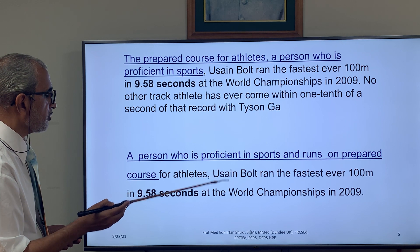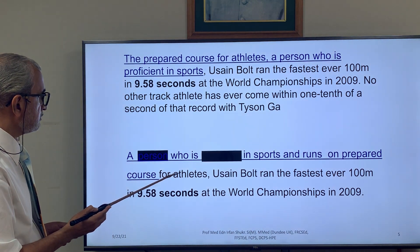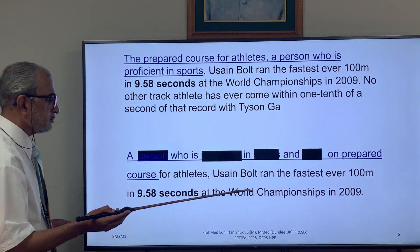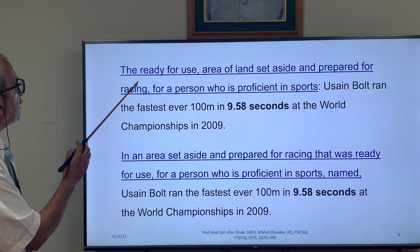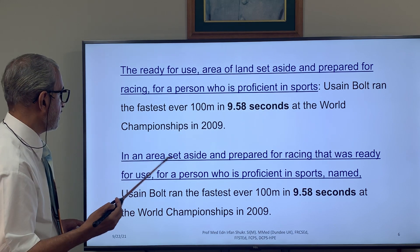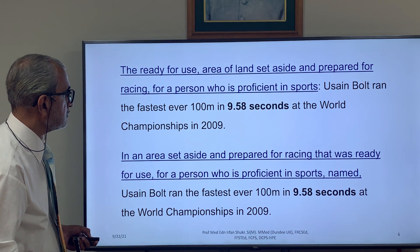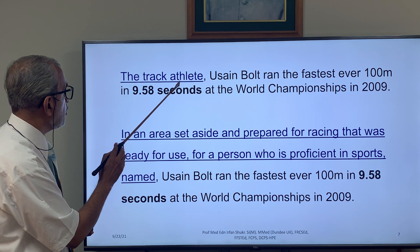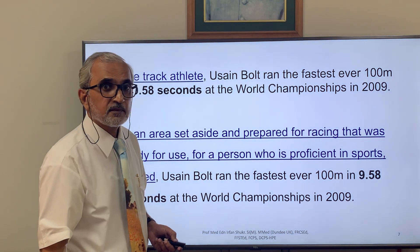There are many concepts in that sentence: 'person' is a concept, 'proficient' is a concept, 'sports' is a concept. If you have to communicate the same information without these concepts, you might say 'the ready-for-use area of land set aside and prepared for racing, for a person who is proficient in sport named Usain Bolt.' Information that could be given in two words now requires twenty or thirty words.